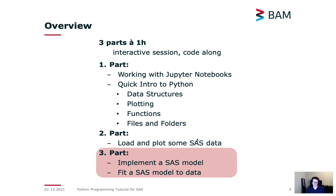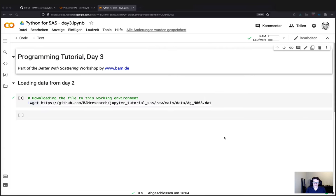Today we will implement a sphere model, similar to what Tim showed earlier with SasView. Using SasView models has the advantage of a larger library of small-angle scattering models, which is a good shortcut. But in this example we go more low-level — we will implement our own sphere model from scratch and fit it to data with some polydispersity.